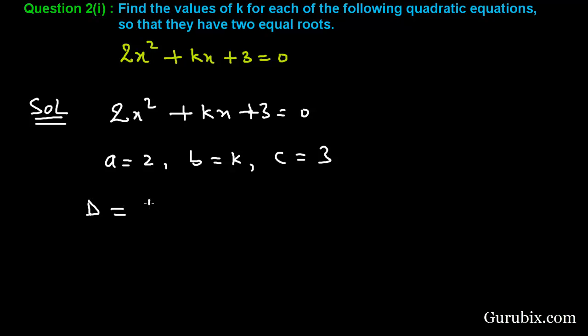Now we shall find the discriminant, that is D = b² - 4ac. b is k, so we shall find k² - 4ac.